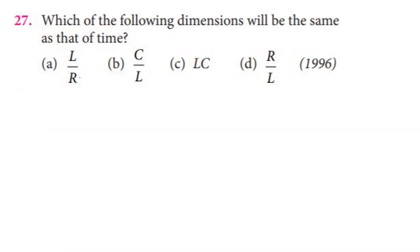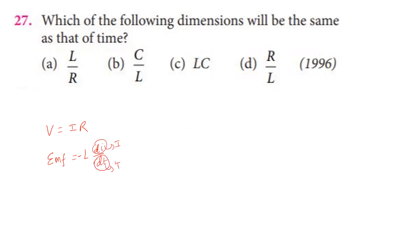Self-inductance formula: induced EMF equals L di/dt. Here di is current dimension and dt is time dimension, and EMF is potential dimension. Comparing with V equals IR: I times R equals L times I divided by dt. Cancelling I, we get R on one side and L/t on the other, so L/R equals time.